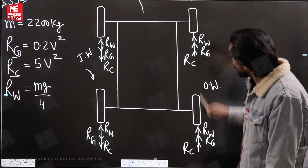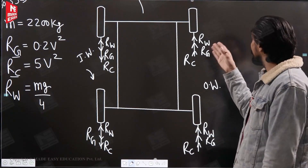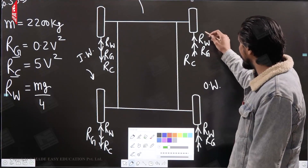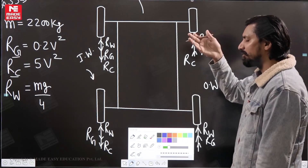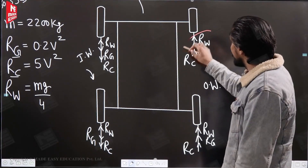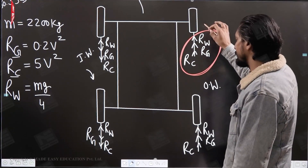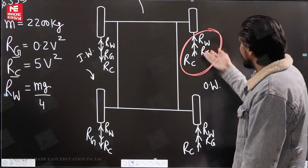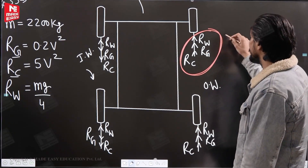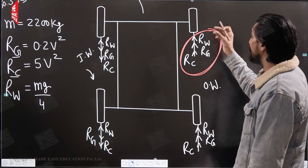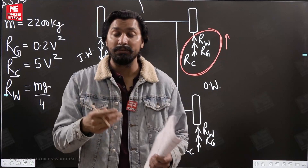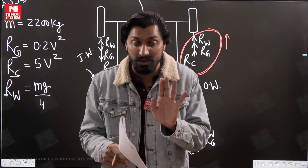A student might think: since the support reaction on the outer wheel is more, shouldn't there be more lifting? No — you are misinterpreting the physics. On the outer wheel, all reactions are in the same direction — whether on the front axle or rear axle. So the total reaction keeps increasing, which means the grip between the outer wheels and the ground keeps increasing.